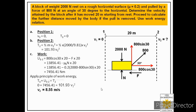Now for part B: we are asked to calculate the further distance moved by the body after the pull is removed. Once the block reaches position 2 with a velocity of 8.55 meters per second, the pull of 800 Newton is removed. The block continues to travel due to inertia, and we need to find the distance it covers before coming to rest. To do this, we must find the retardation on the block due to friction after position 2, by drawing a new free body diagram without the pull.